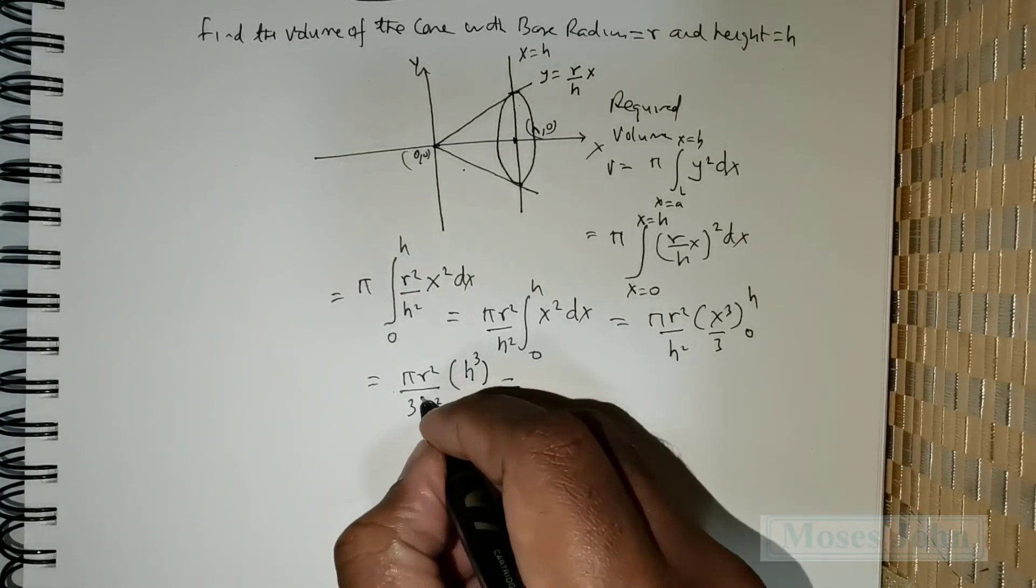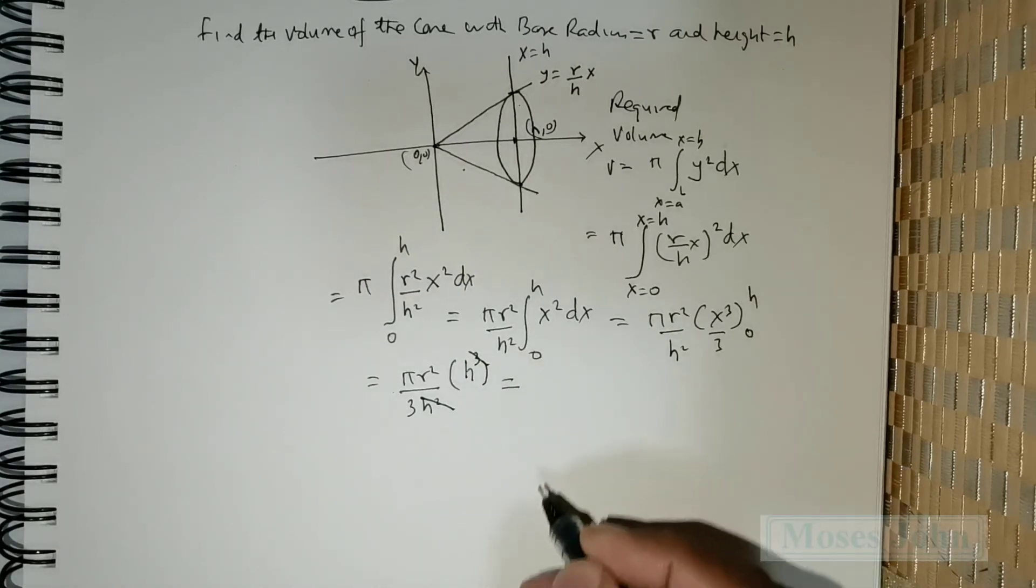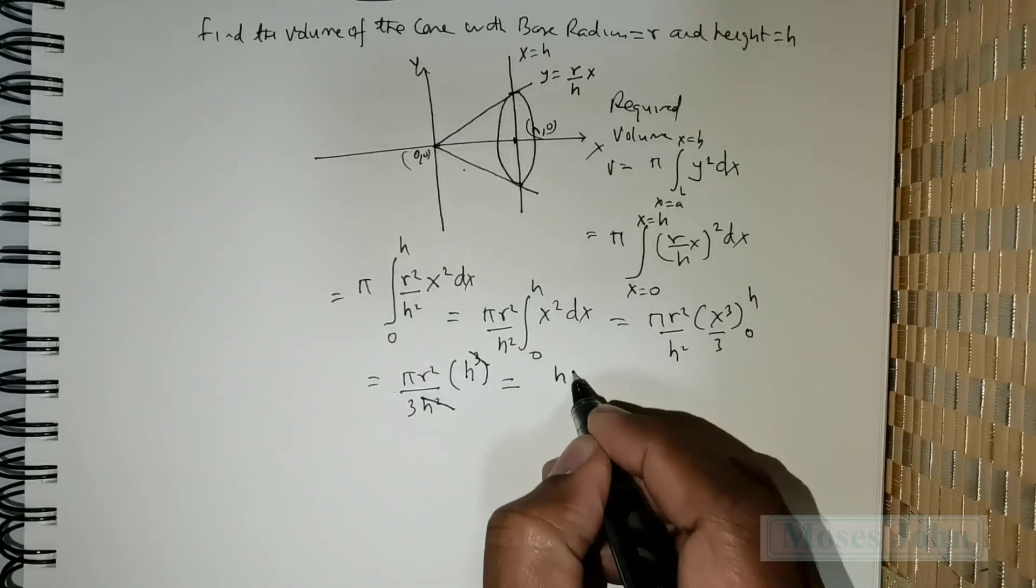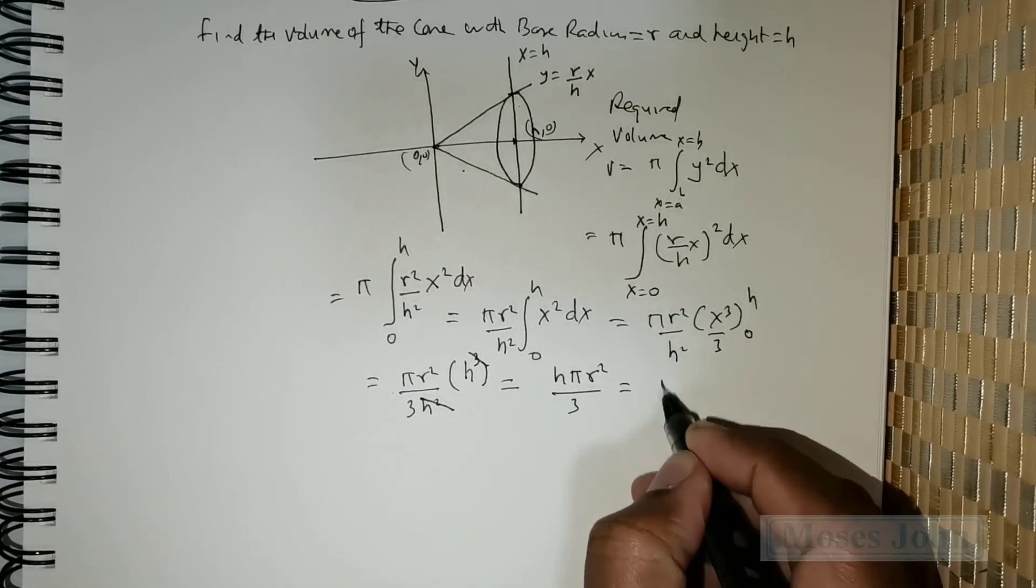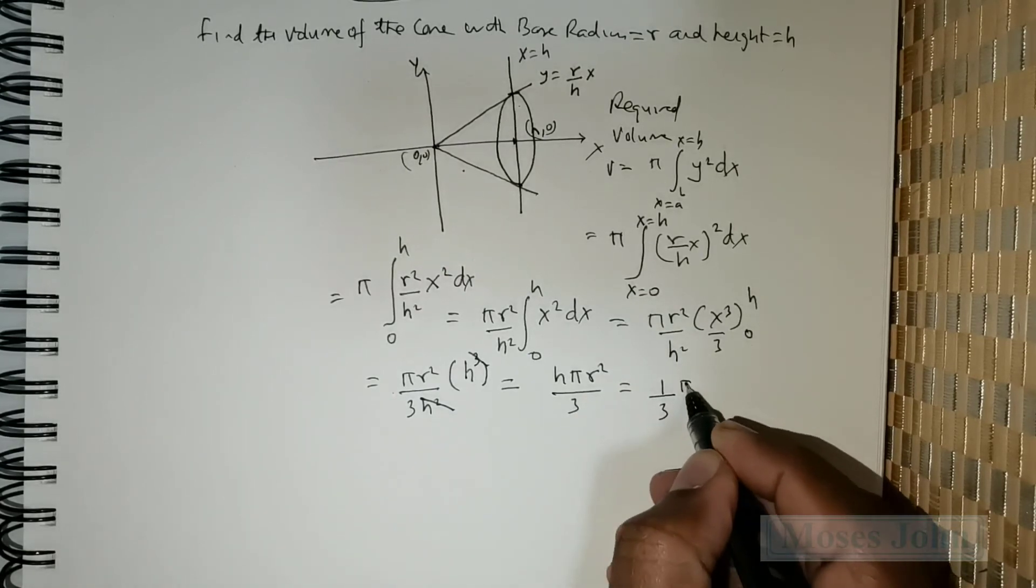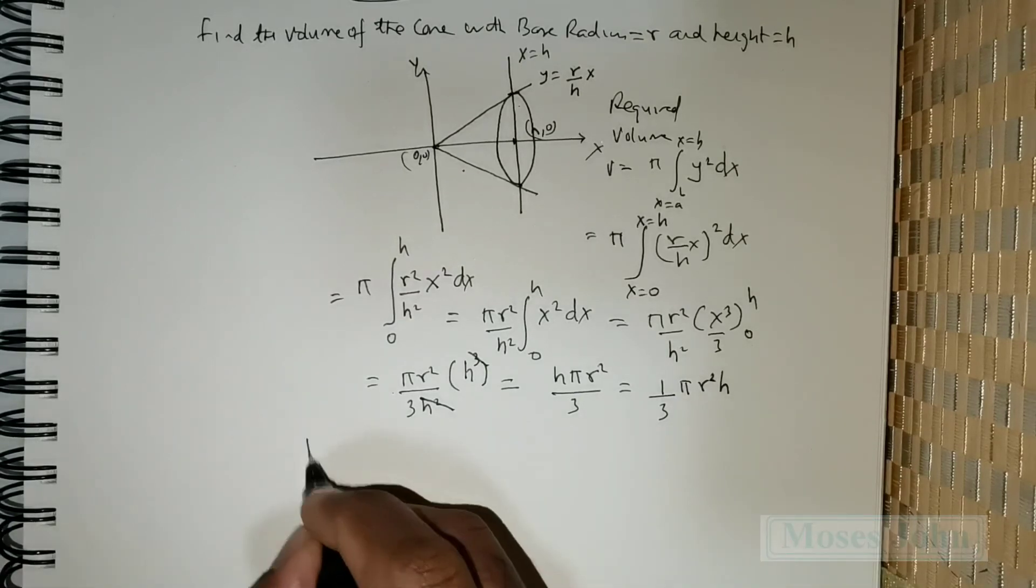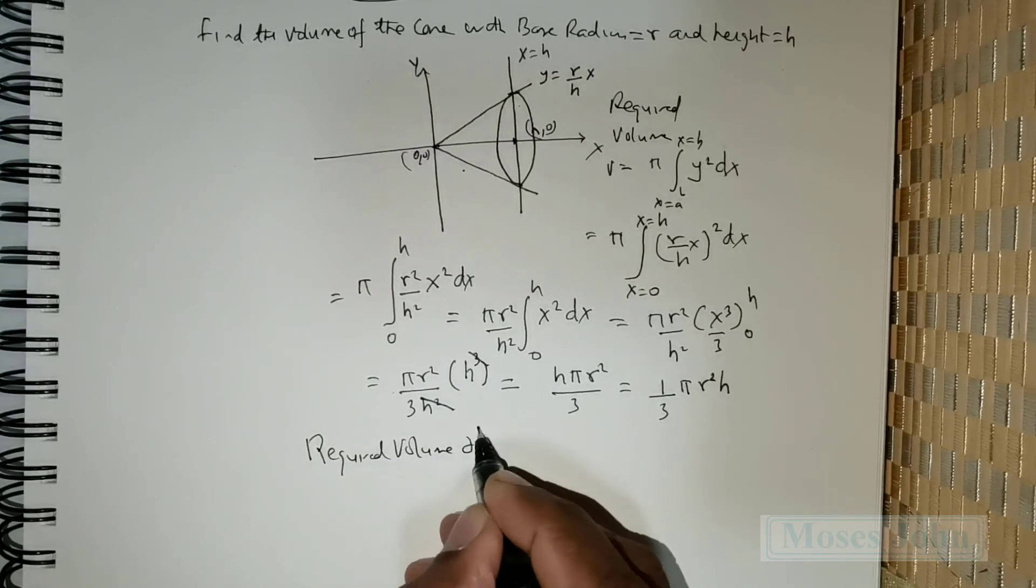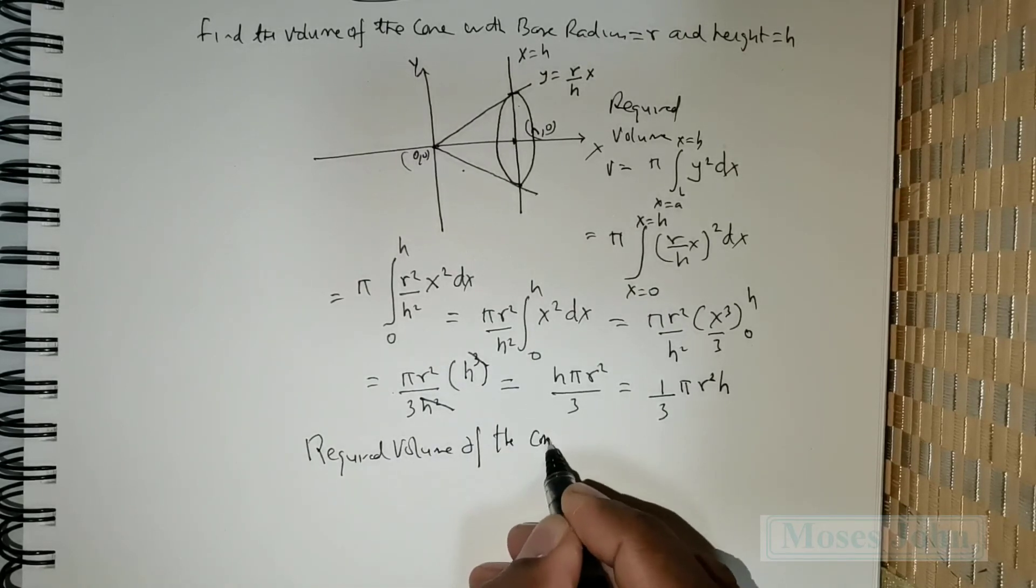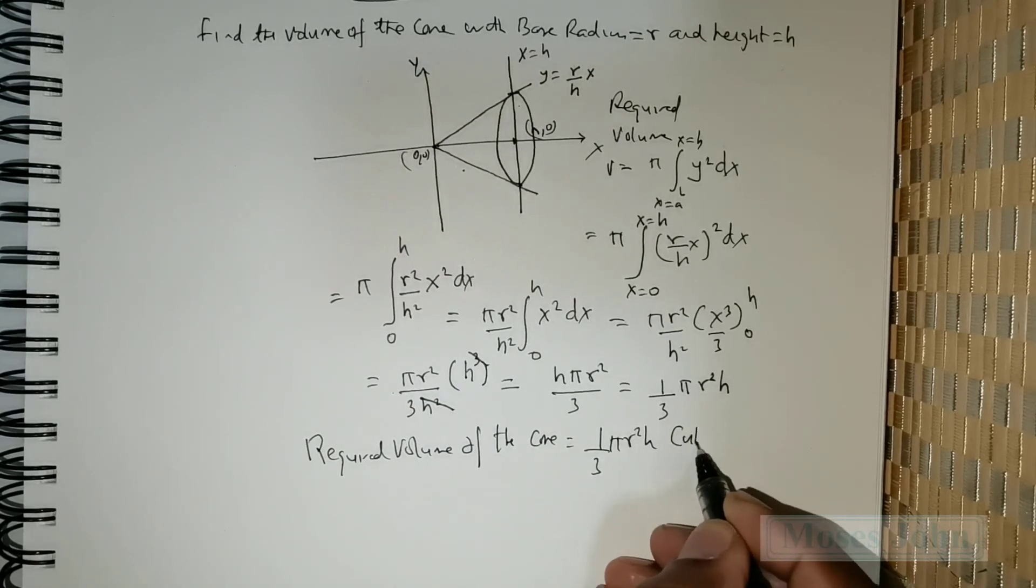This can be rewritten by canceling the denominator h squared with the ones in the numerator. So that will give me h times pi times r squared divided by 3. I can rewrite it in the usual form, which is 1 over 3 pi r squared h. So the required volume of the cone is equal to 1 over 3 times pi r squared h cubic units.